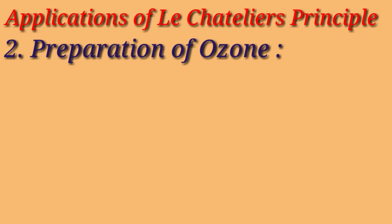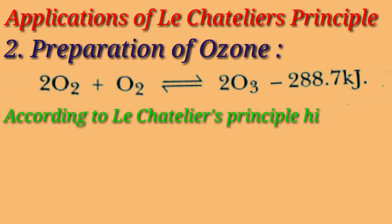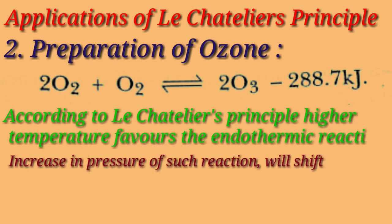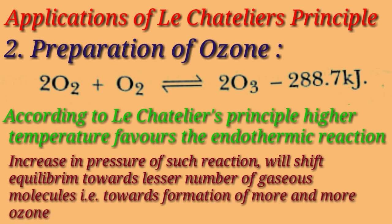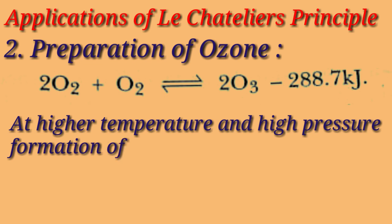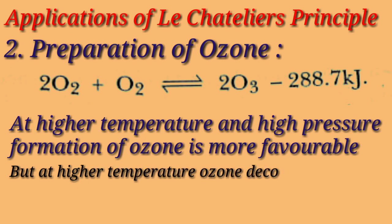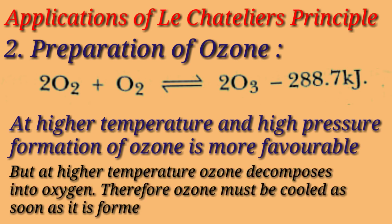Next is the preparation of ozone. This reaction is endothermic — heat is absorbed — because it is given as minus 288.7 kJ. We know that at higher temperature, endothermic reactions are more favorable. If we increase the pressure of such a reaction, it moves towards the lesser number of molecules, that is towards the right side. So, at higher temperature and high pressure, formation of ozone is more favorable. But at higher temperature, ozone decomposes into oxygen. Therefore, ozone must be cooled as soon as it is formed.